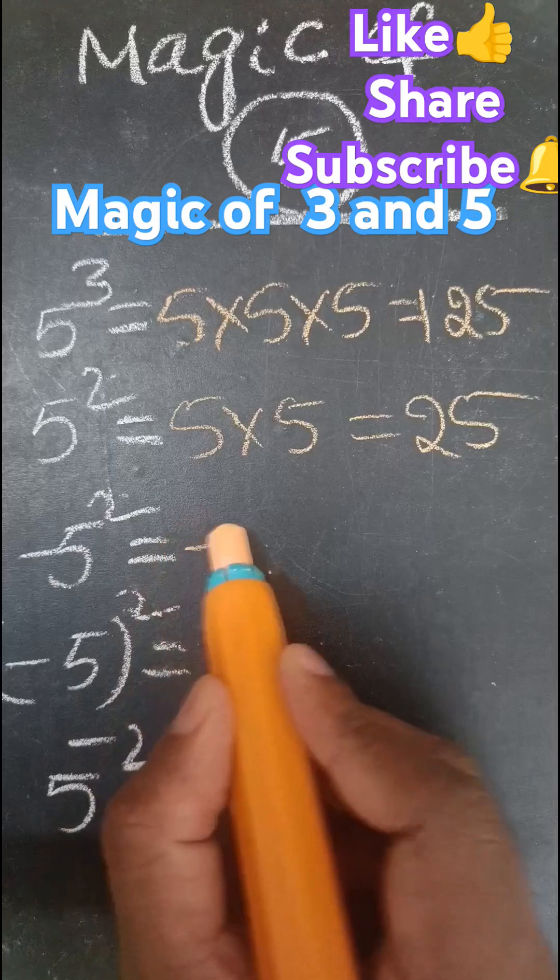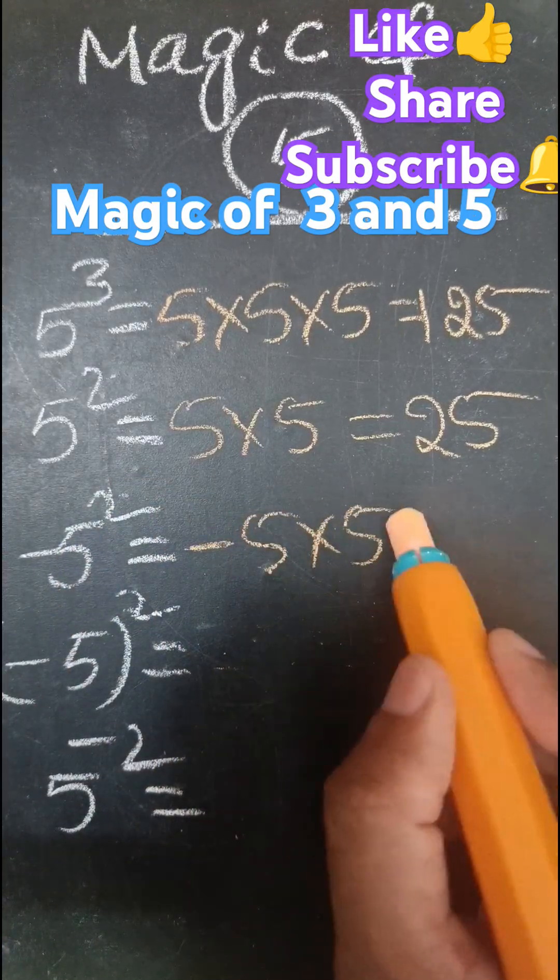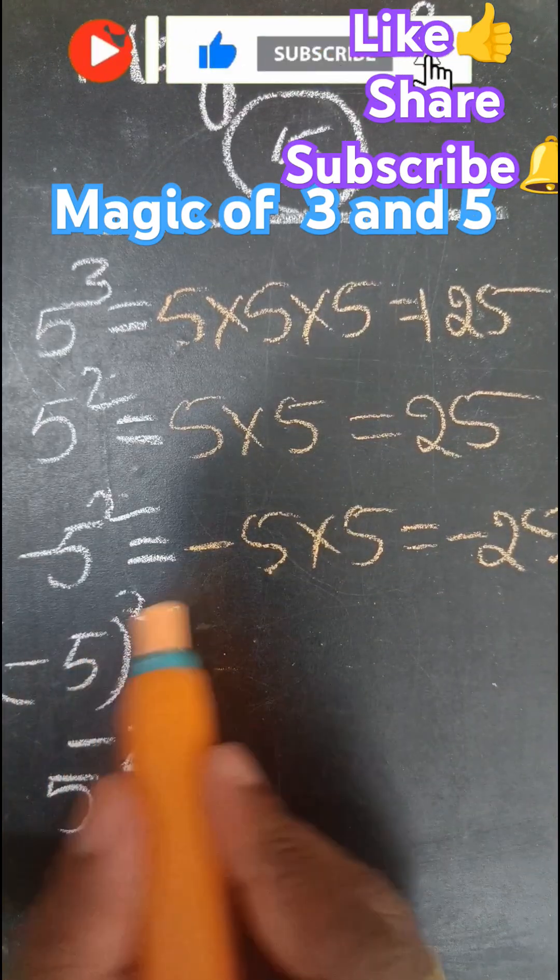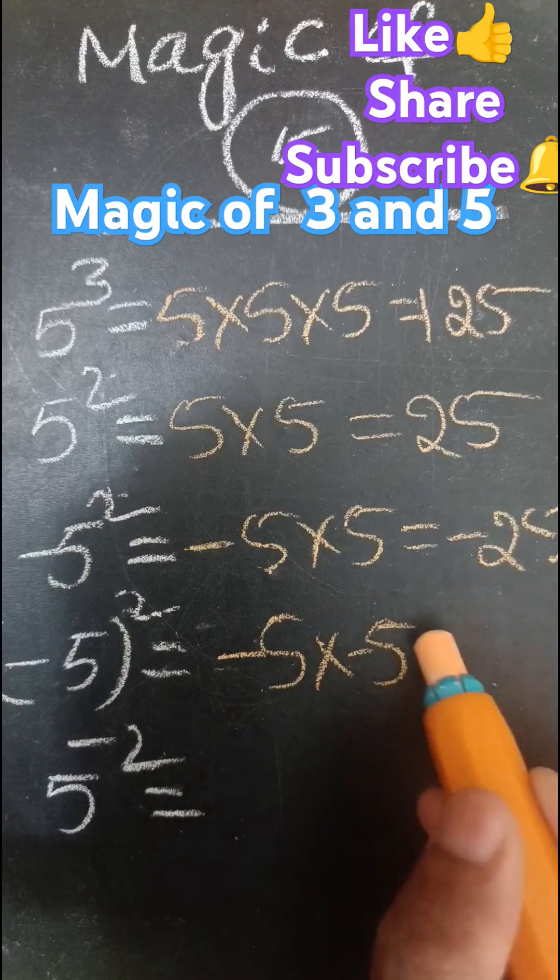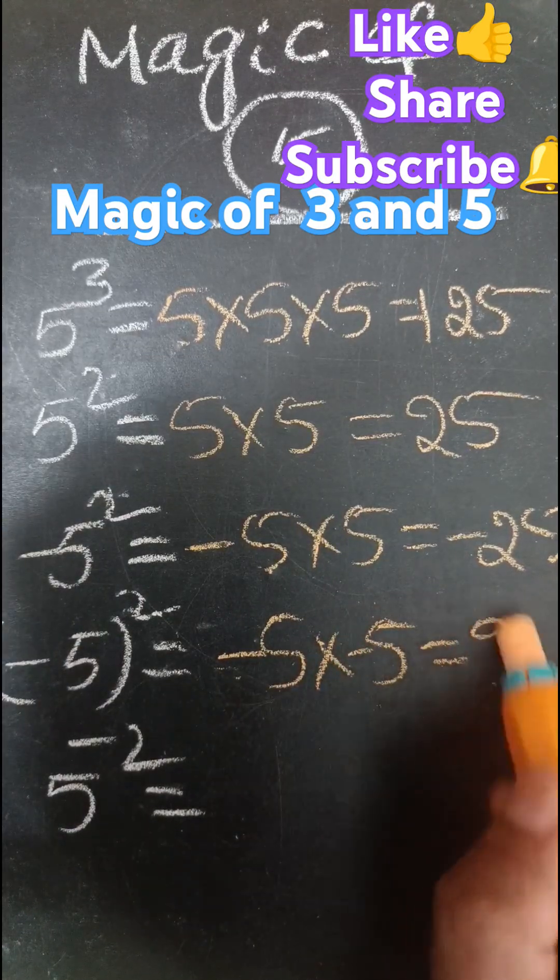Minus 5 square. Minus 5 square. Minus 5 into minus 5. Minus into minus, plus 5 into 5, minus 5, minus 25.